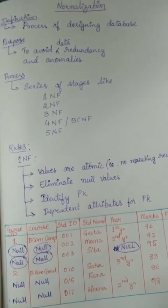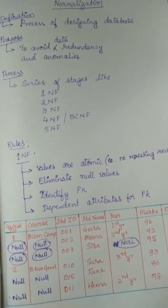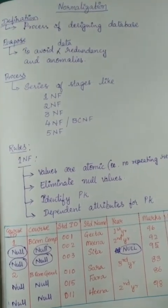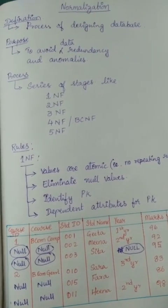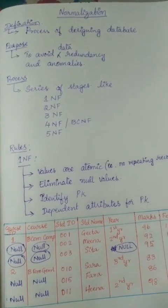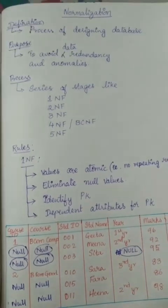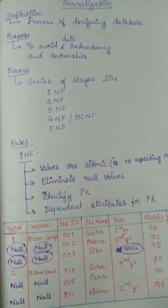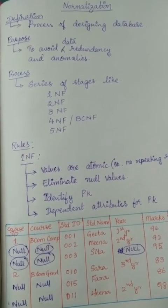Normalization is nothing but a process of designing a database. When we get any raw data — that is raw information — it is stored as it comes, so there is no particular order in how it is being stored. When we are creating a database to store this data, we have to do some kind of filtering and sorting of data to decide where to store it. This is how we are going to design a database.